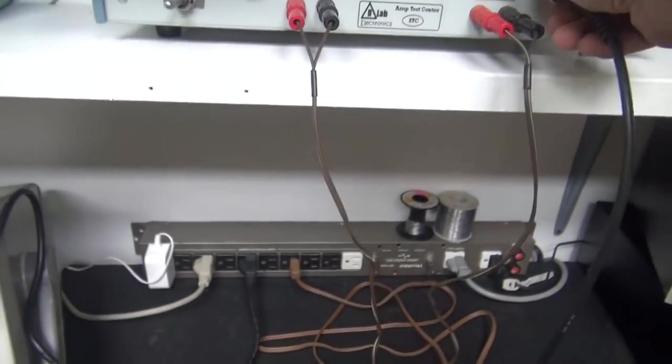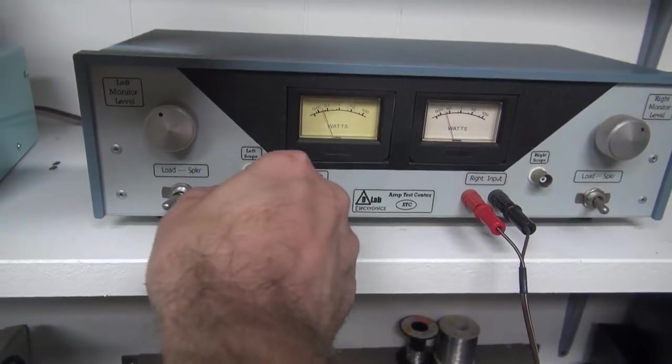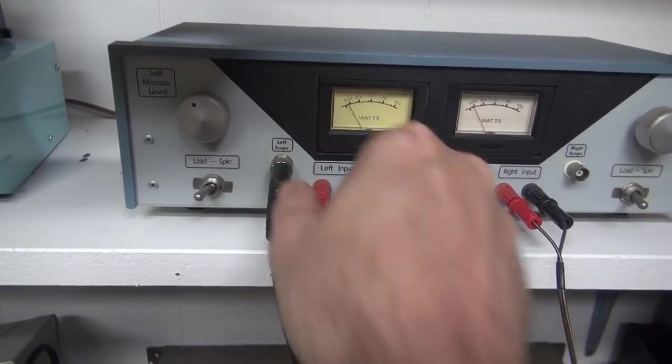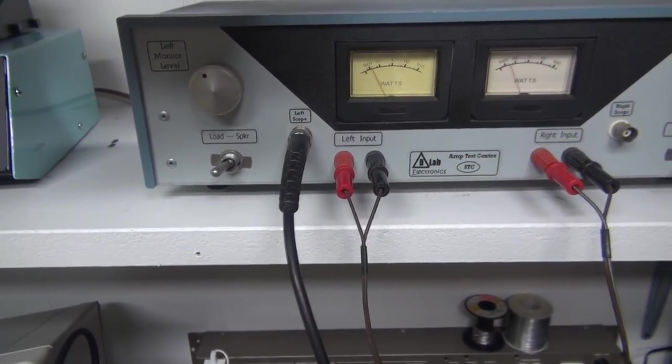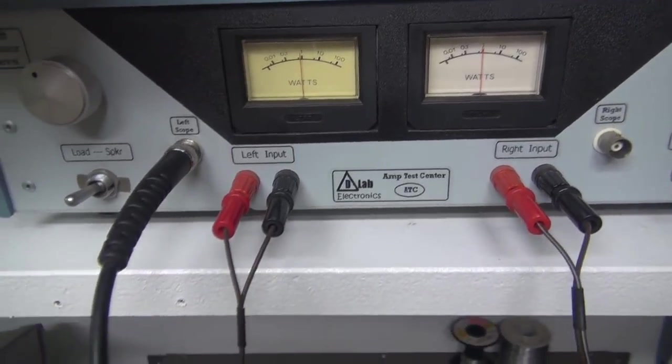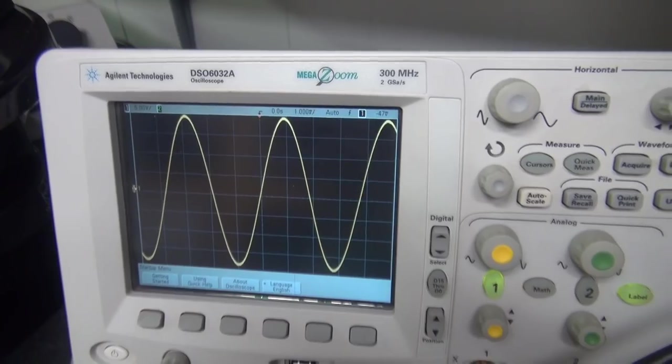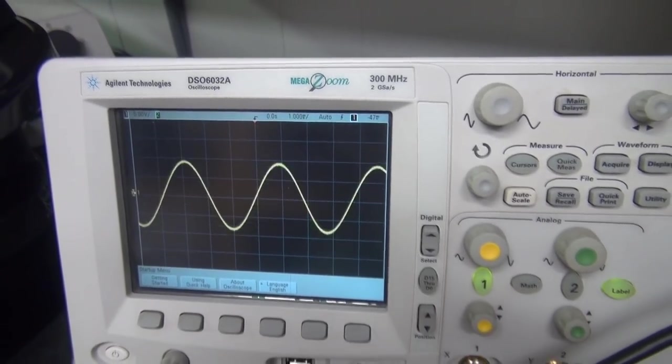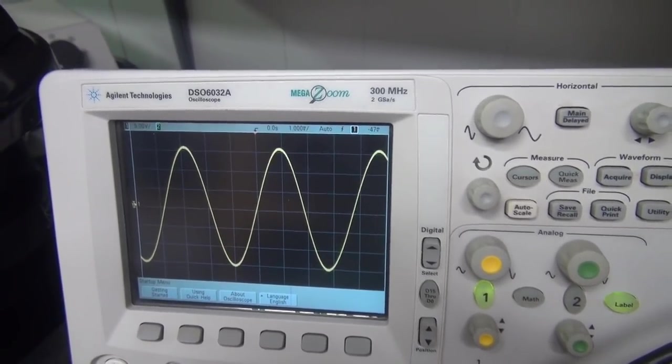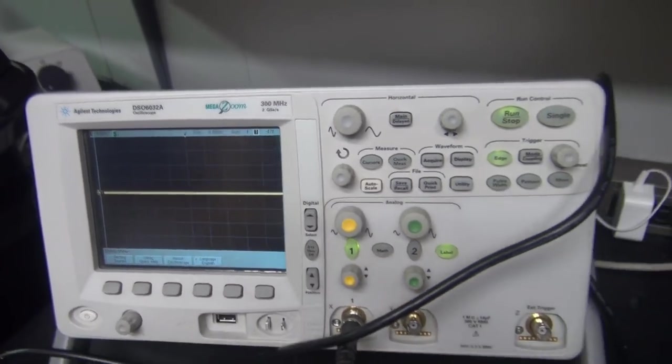All right, now let's flip over to the left. Bring our volume back up. You can see the wattmeters are doing their thing. Now this was the good channel initially. Same as the other. It appears as though the amp is fixed.